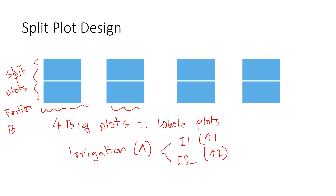In the split plot, I'm testing fertilizer — different types of fertilizer, factor B. I have two levels: B1 and B2.